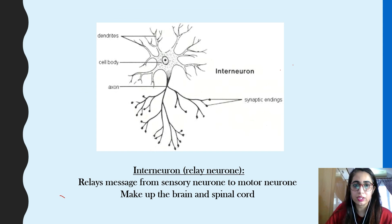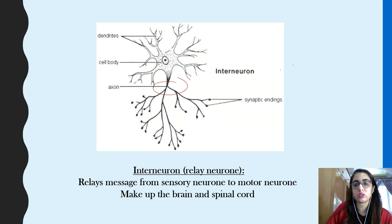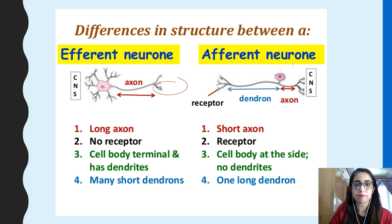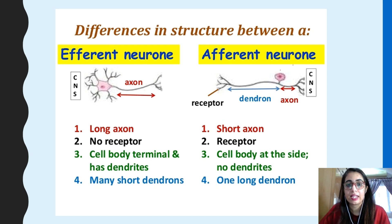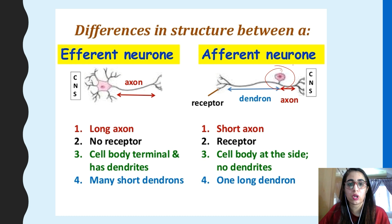The interneuron does not have a long axon — it has a very short axon. It relays messages from the sensory neuron to the motor neuron and makes up the brain and spinal cord, including the gray and white matter. The key difference is that the efferent neuron has a long axon while the interneuron has a short axon. There are no receptors in the efferent neuron, but there are receptors in the afferent neuron since the afferent neuron transmits impulses from the receptor. The afferent neuron has many short dendrons, while the efferent neuron has only one long dendron.